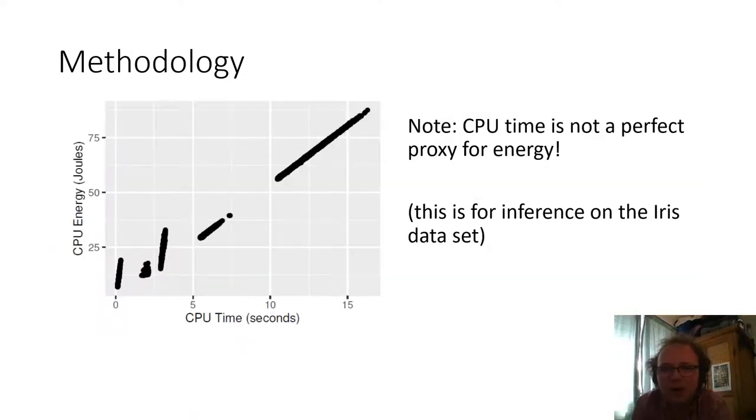You might be wondering why we're not just using CPU time as a proxy for energy, and anyone who's done energy measurement will know that the relationship isn't as straightforward as that. This is for all configurations on a particular data set, the CPU time versus CPU energy, and you can see that although there is overall a bit of a linear trend there, there's a lot of other things going on too.